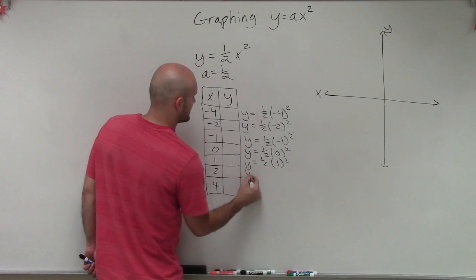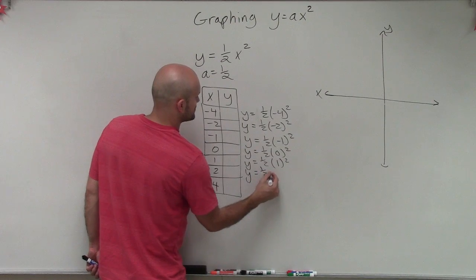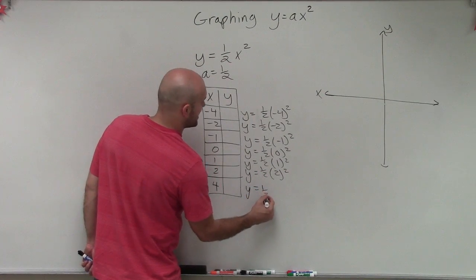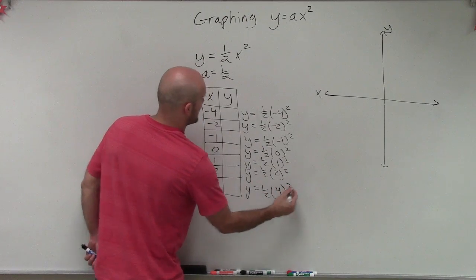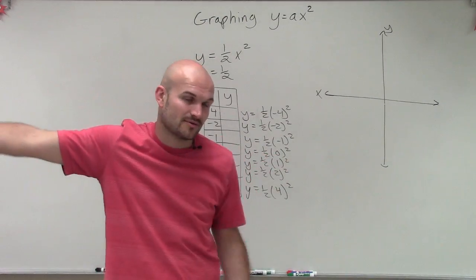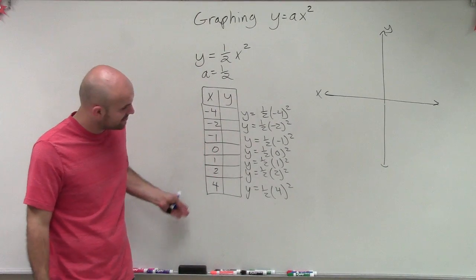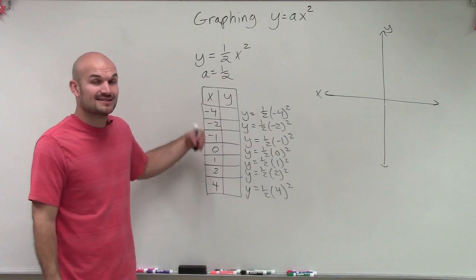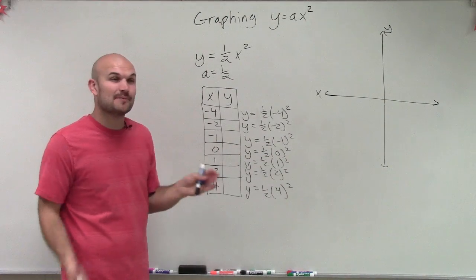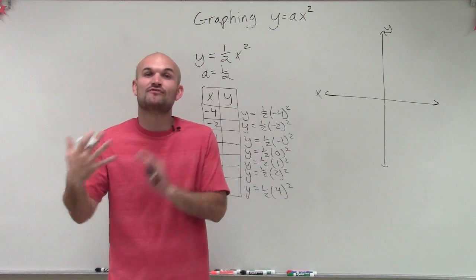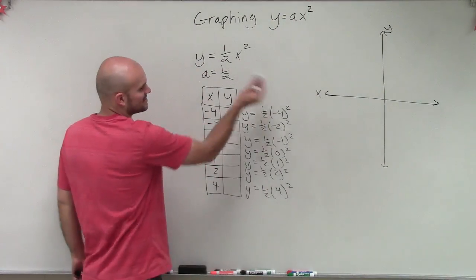One thing to notice about the table of values that I did choose, I did choose values that were exactly the same except one being positive and one being negative. You could choose any points to the left and any points to the right. But it's also very helpful to choose values that are exactly the same, just one side of the axis of symmetry and one on the other, because since they're on both sides of the axis of symmetry, they're going to reflect about each other.